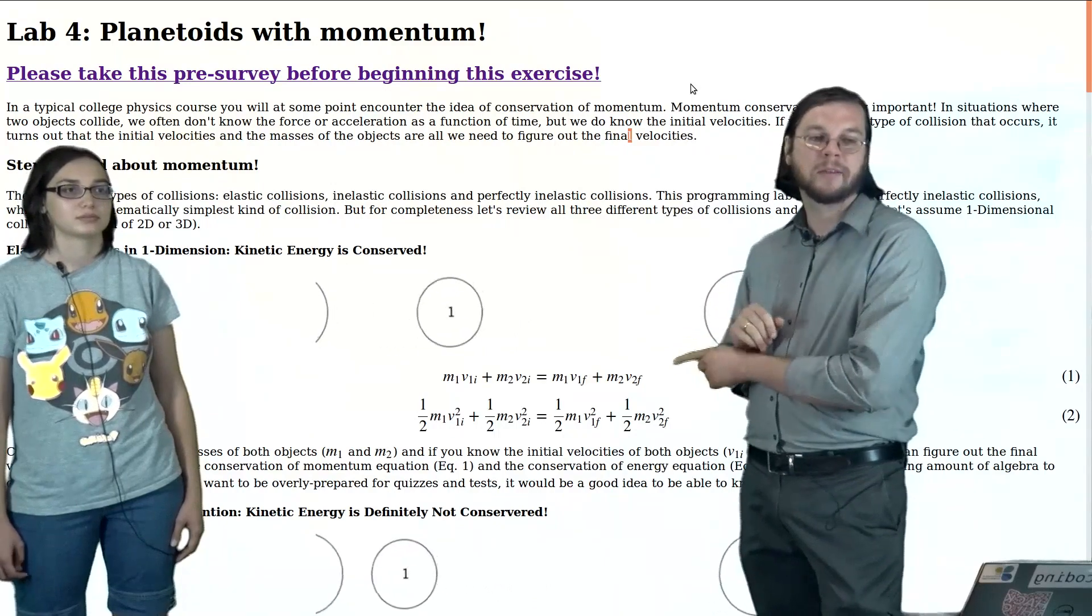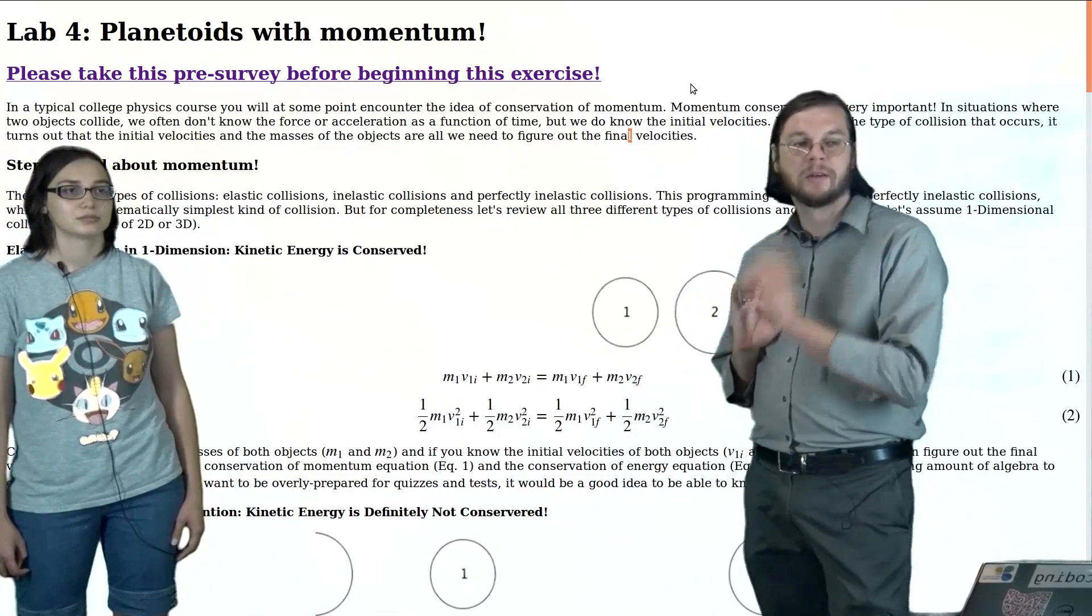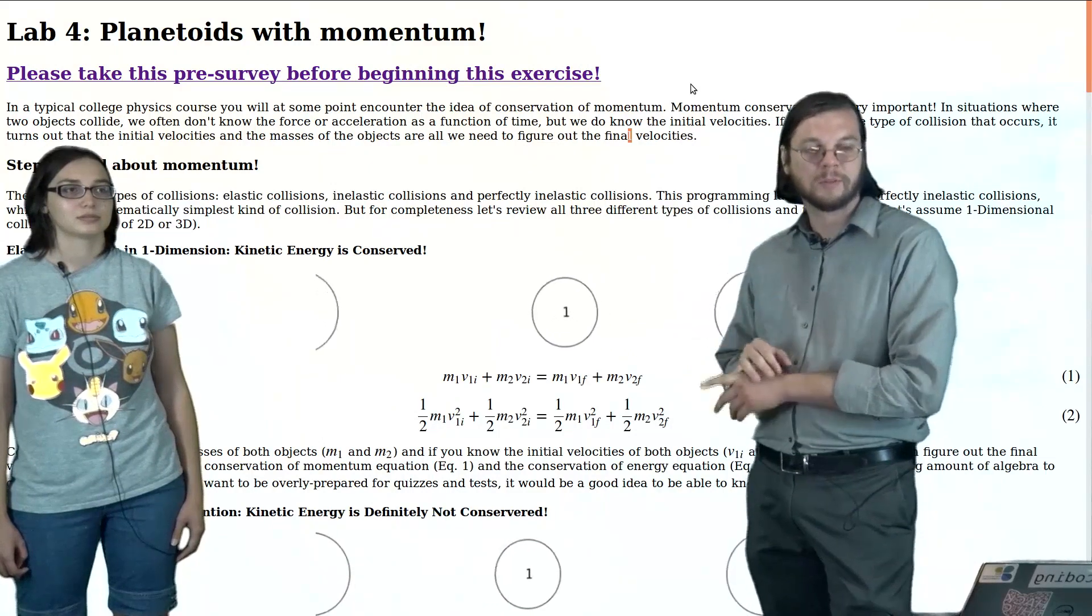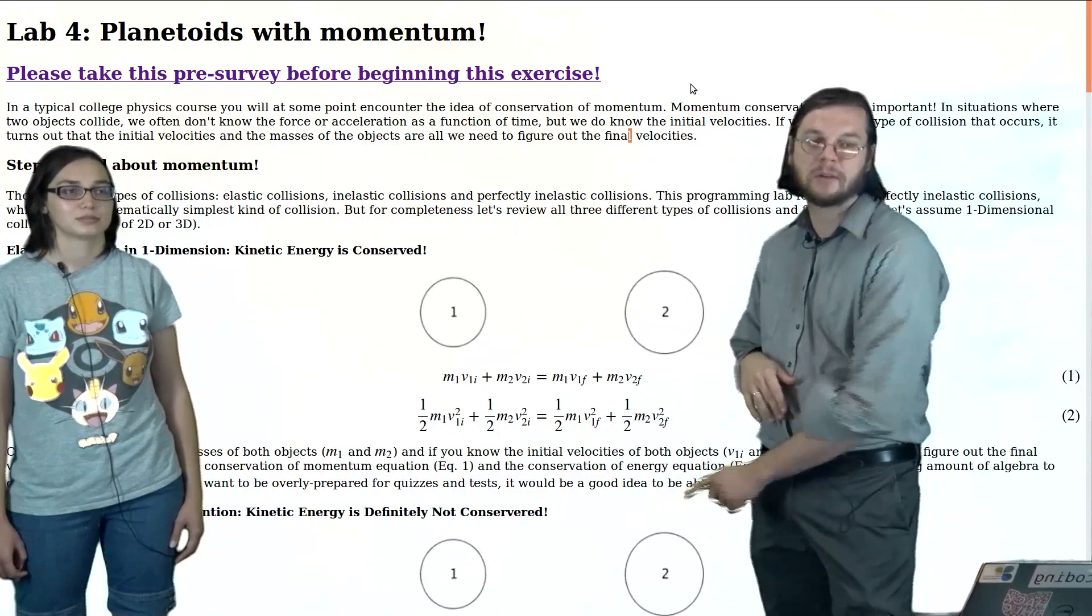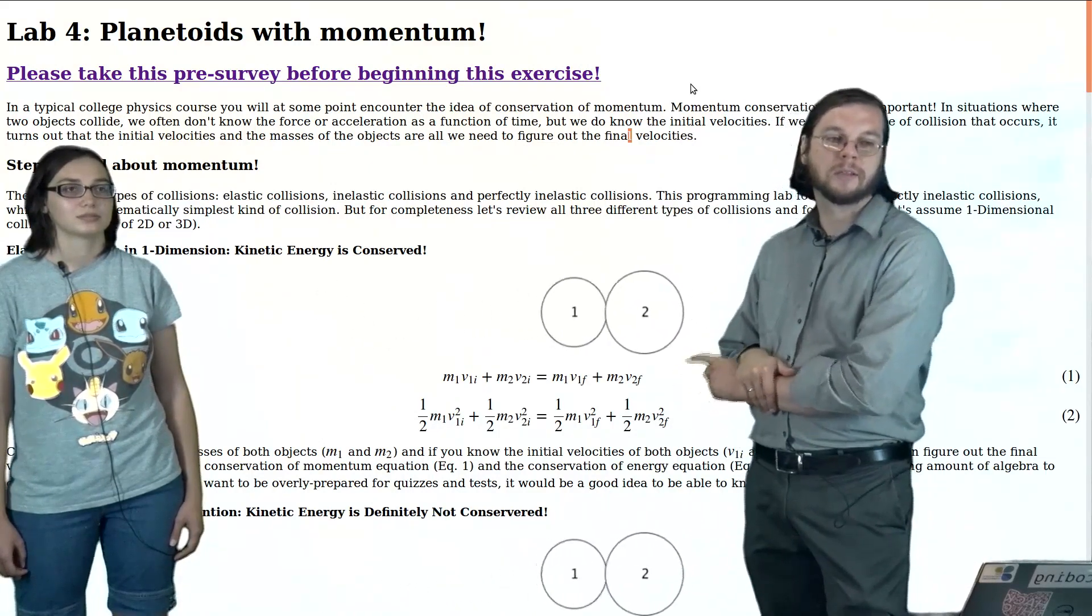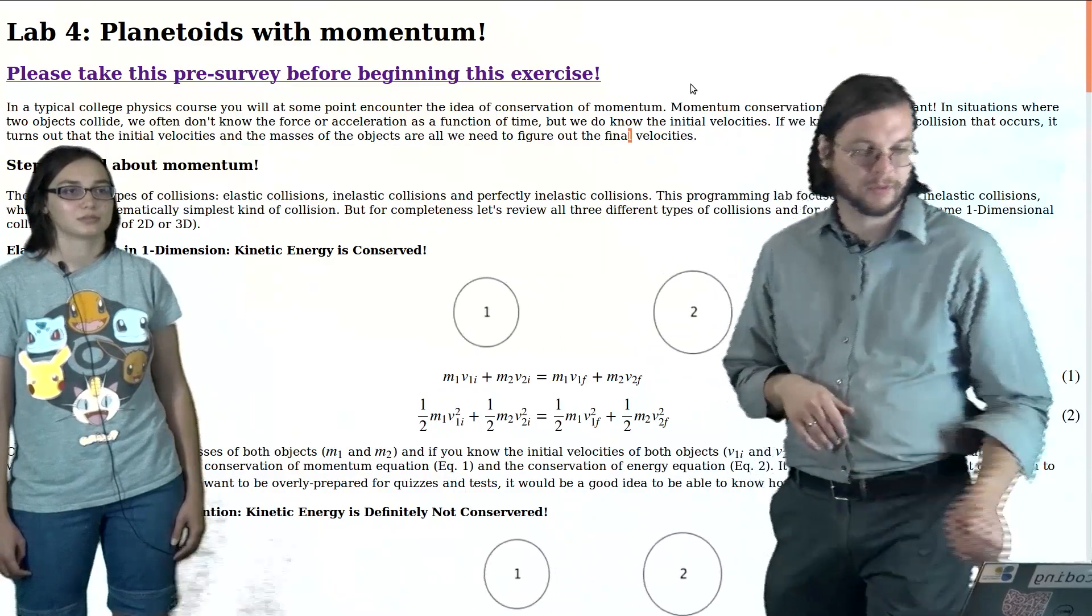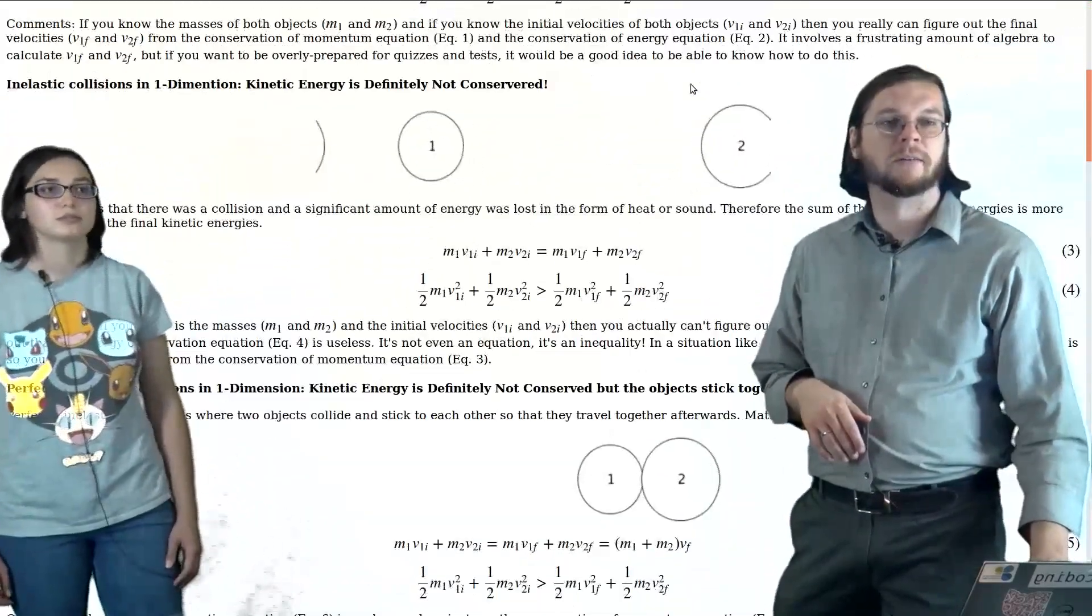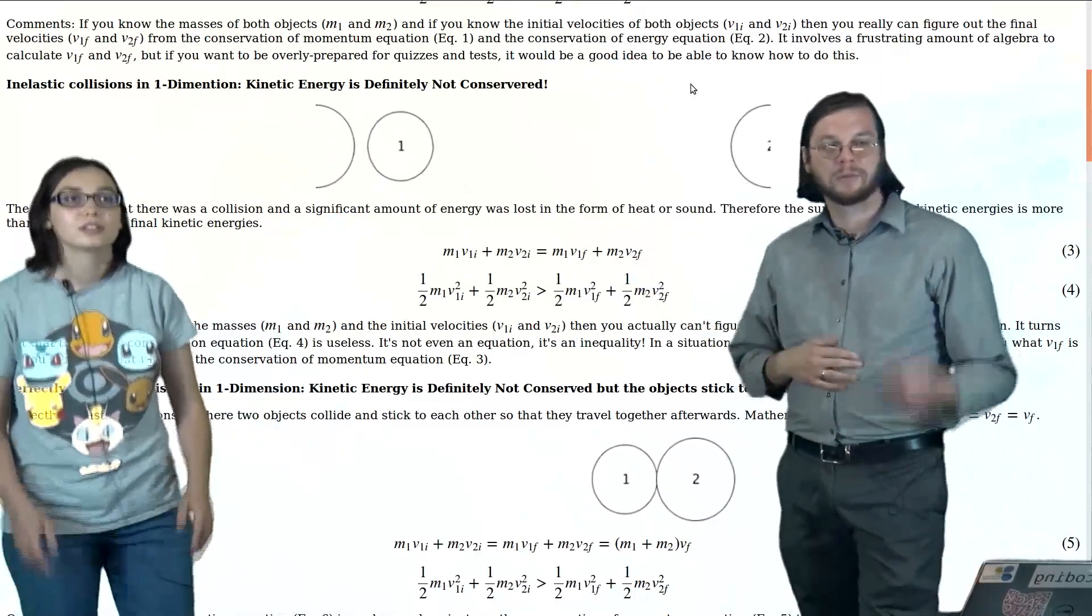And then this line here, this has to do with momentum conservation. This line, you know, momentum is always conserved in all three of these collisions. And so this line, this equation represents that. The next one down here, you want to talk about that one, Julia? Yeah.